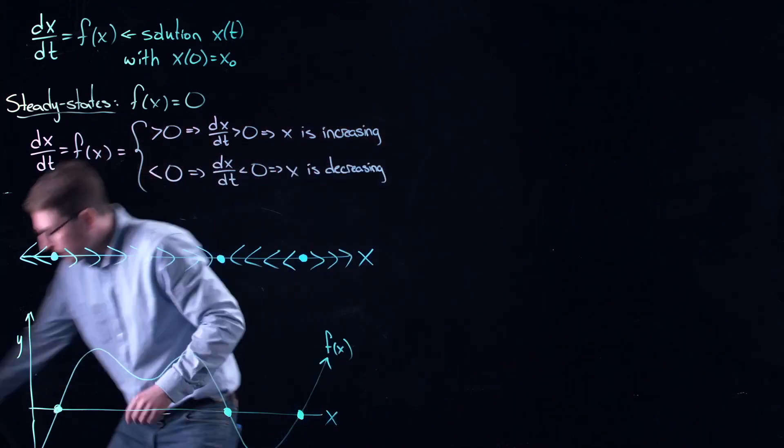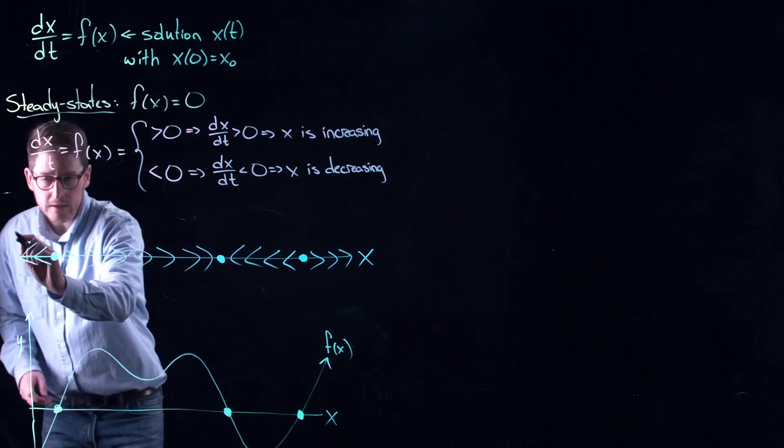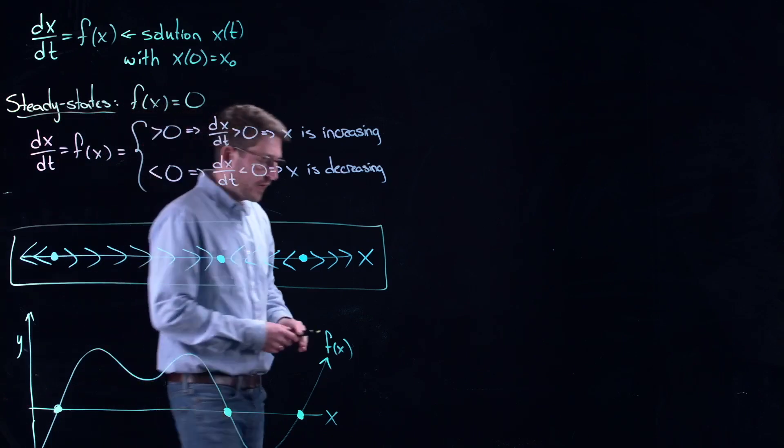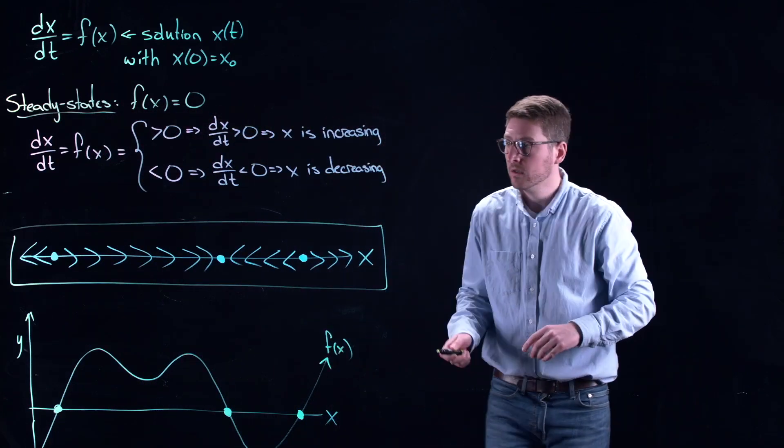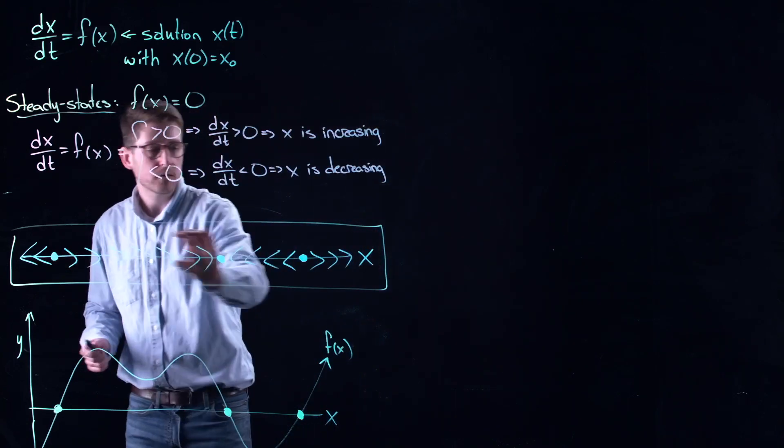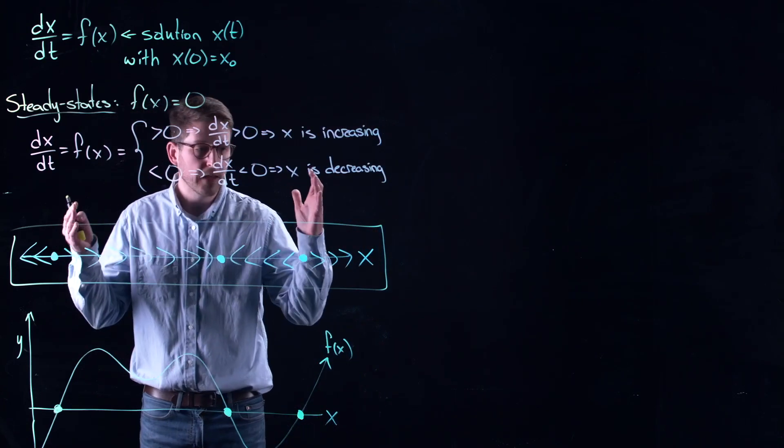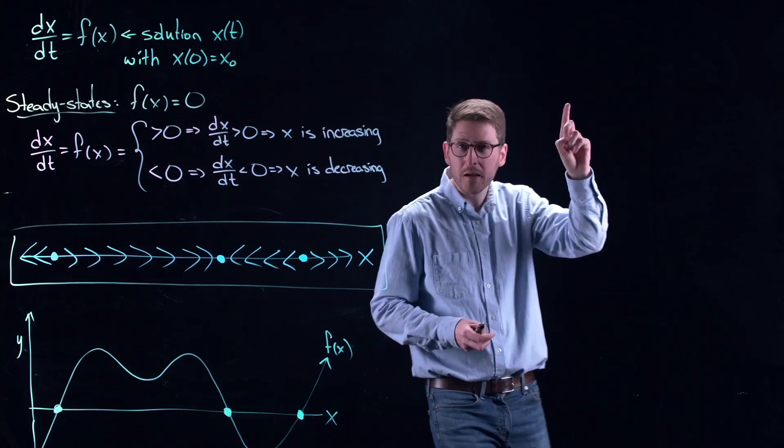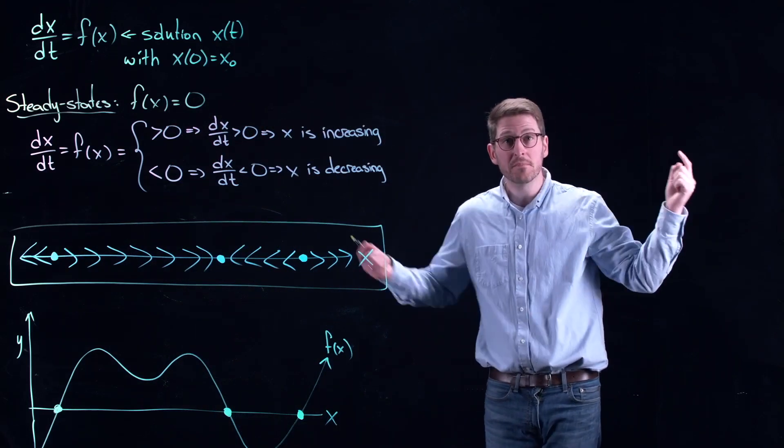This, right here, is all that I need to understand my differential equation, if that's what my f looks like. All of the information I care about is on this line, right here. This is what's called a phase line diagram. Notice there is no time anywhere on it. Time is indicated by arrows.